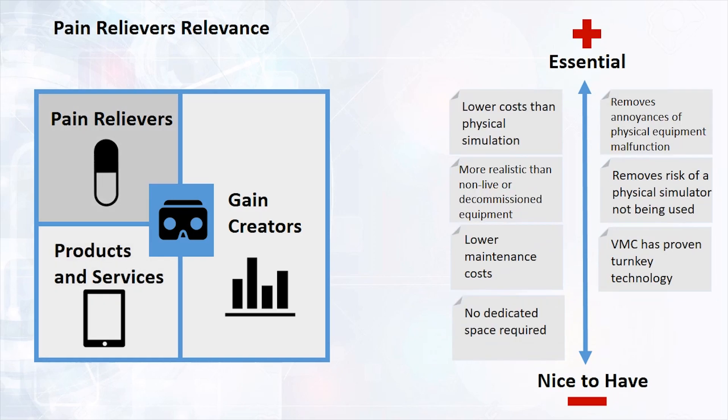Our pain relievers include lower costs than physical simulation and a more realistic experience for the user than decommissioned equipment that they will never experience in their working lives. They also remove the risks that the physical simulation does not get used as students cannot relate to it. We offer lower maintenance costs than physical simulation too and it removes the risks of breakdown or malfunctions.